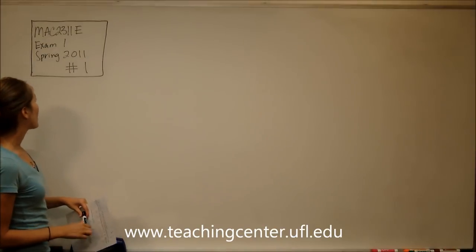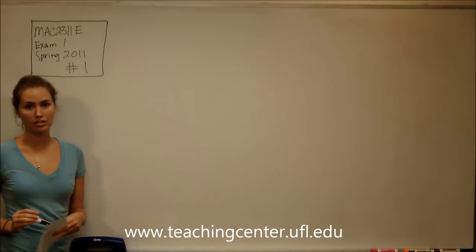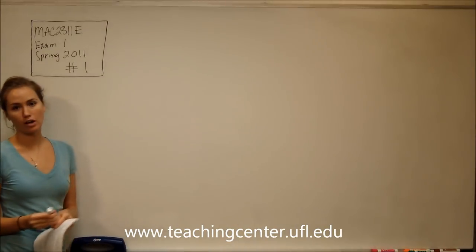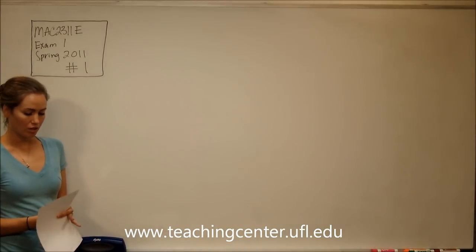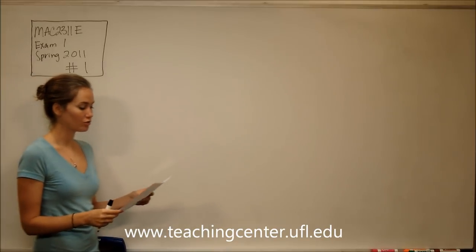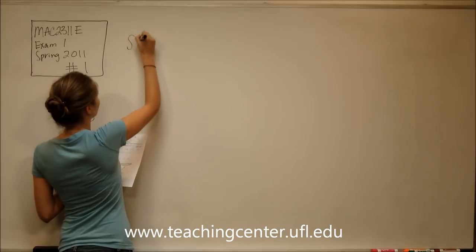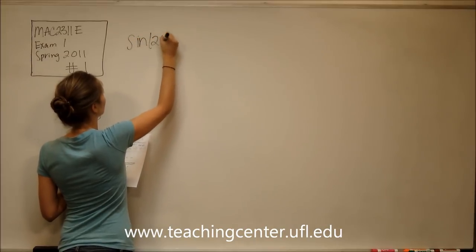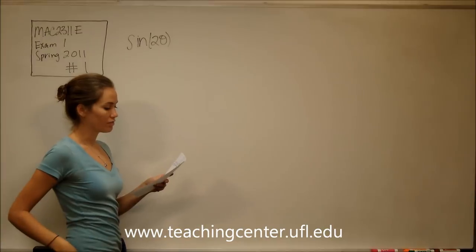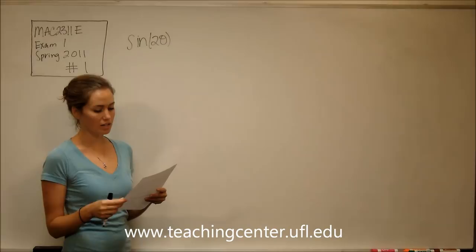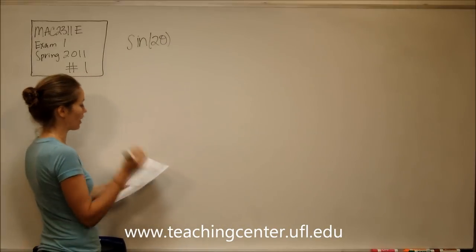Hi, today we are doing problem number one for Engineering Calc Mac 2311e Exam 1 from Spring 2011. Number one asks us to find the value of sine two theta if theta is an angle in quadrant two and the cosecant of theta is equal to square root of five divided by two.